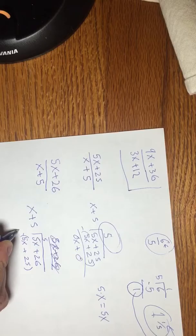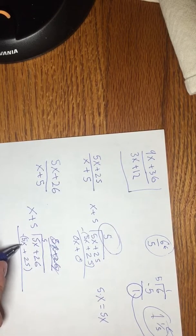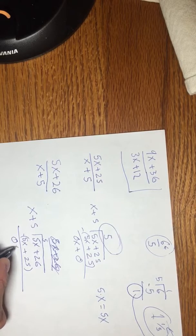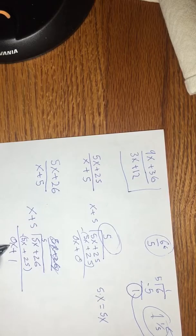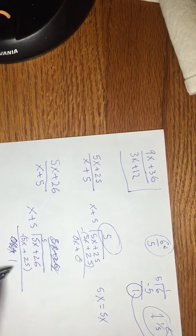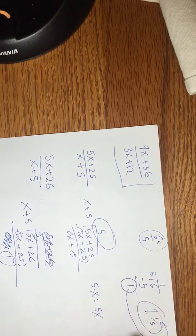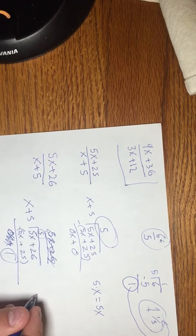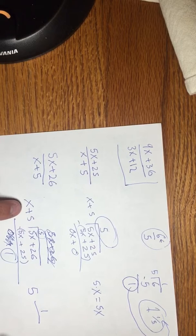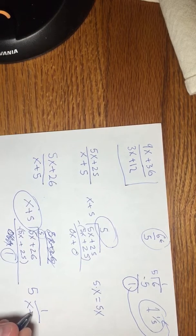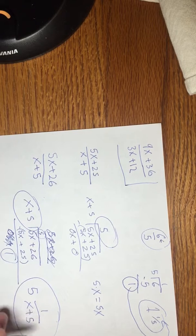5 times x is 5x and 5 times 5 is 25. Remember, we're subtracting all of this. So that gives you 5x plus 26 minus 5x plus 25. That gives you 0x plus 1. So if this is 0x, well, that just equals 0. We can get rid of that. But this is our remainder and this is what we have. So same thing as what we did up here. We're going to bring the 5 over and then our remainder 1 over, what were we dividing by? We were dividing by x plus 5. Okay, that would be your answer in this case.